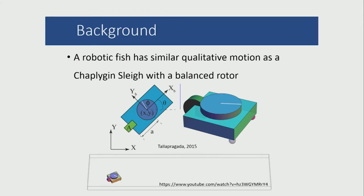The dynamics of a robotic fish has been proven to have a similar qualitative motion as a Chaplygin sleigh with a balanced rotor. A Chaplygin sleigh occurs with two casters in the front, a non-constrained wheel, and a balanced rotor on the inside. What the balanced rotor does is creates an angular velocity on the body which causes it to go forward due to a nonholonomic constraint.